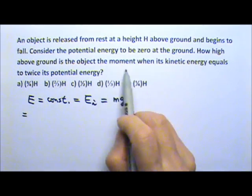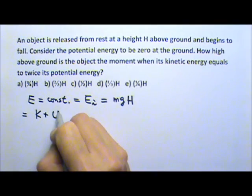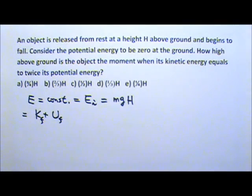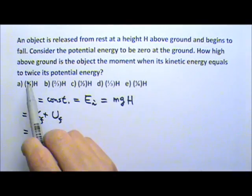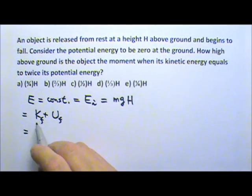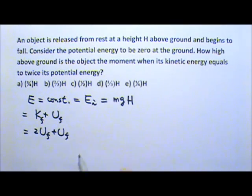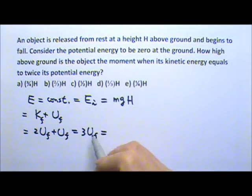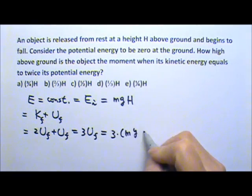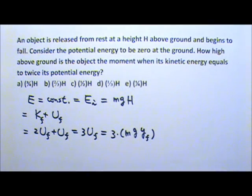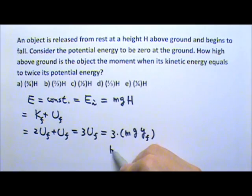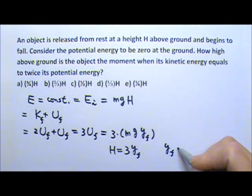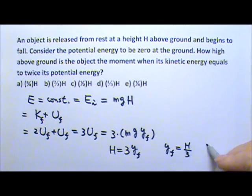Now at that particular moment, the E is K plus U. If you want, you can write the final or K₂, the second stage. And we know that the kinetic energy equals twice the potential energy. So this can be rewritten as twice the potential energy. So this equals three times the potential energy. And the potential energy is mgy. And that will be the final height. So if you set these two equal and cancel the mg, you will get H equals three times the final height. And so the final height, the height at that moment is H divided by three. The answer is D.